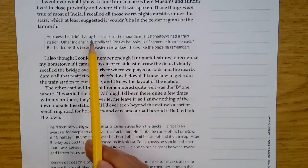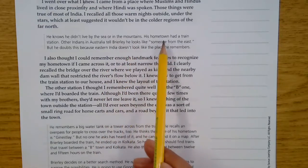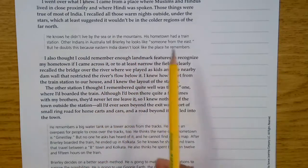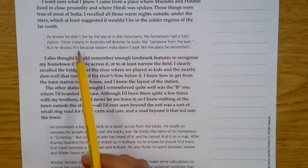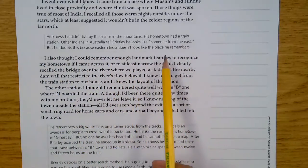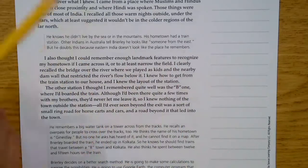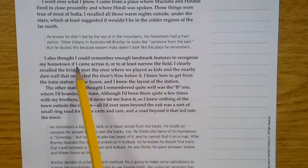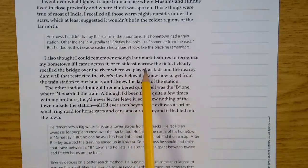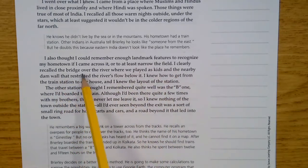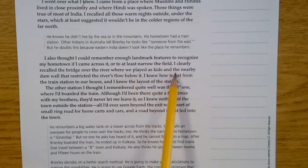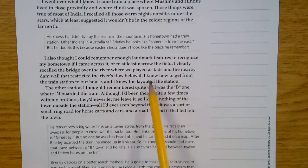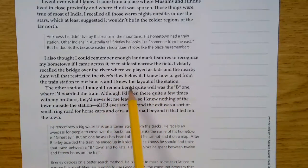He knows he didn't live by the sea or in the mountains. His hometown had a train station. Other Indians in Australia tell Brierley he looks like someone from the east, but he doubts this because eastern India doesn't look like the place he remembers. I also thought I could remember enough landmark features to recognize my hometown if I came across it, or to at least narrow the field. I clearly recalled the bridge over the river where we played as kids and the nearby dam wall that restricted the river's flow below it. I knew how to get from the train station to our house and I knew the layout of the station.